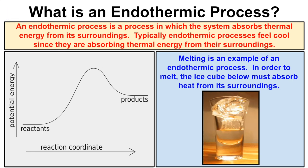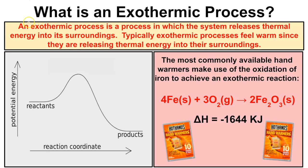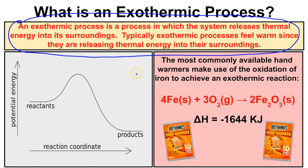Exothermic processes are the exact opposite. An exothermic process is a process in which the system releases thermal energy or heat into the surroundings, and typically exothermic processes feel warm. For example, hand warmers contain iron, and when you tear open the package, oxygen from the environment reacts with iron to produce iron(III) oxide: four moles of iron reacts with three moles of oxygen gas to produce two moles of iron(III) oxide, with a delta H of negative 1644 kilojoules.